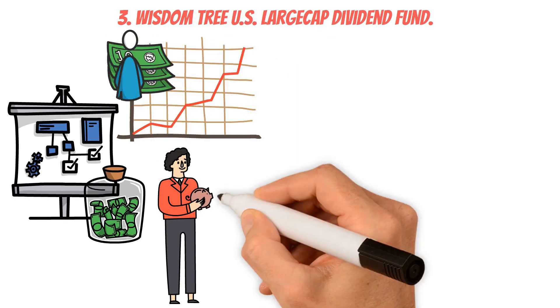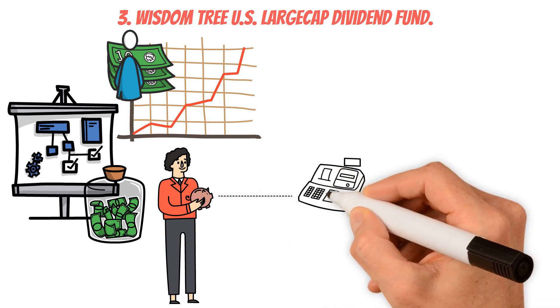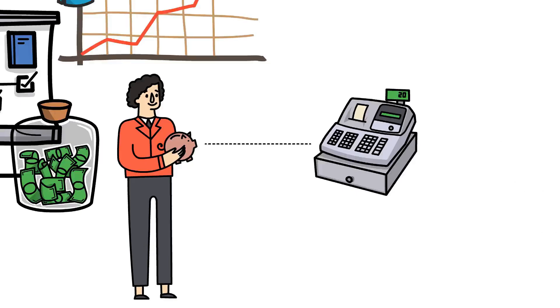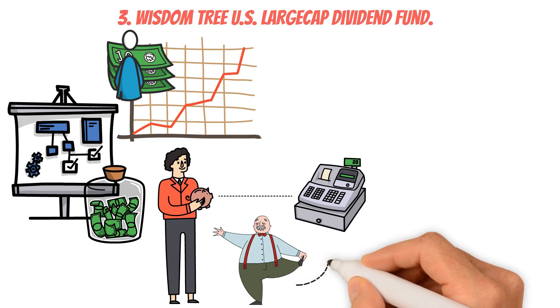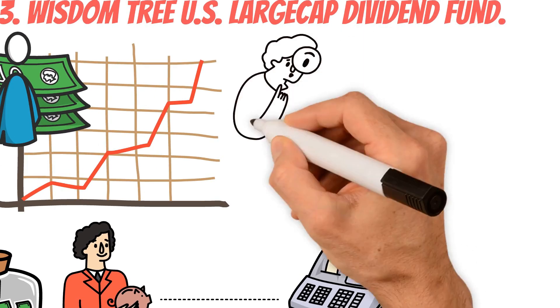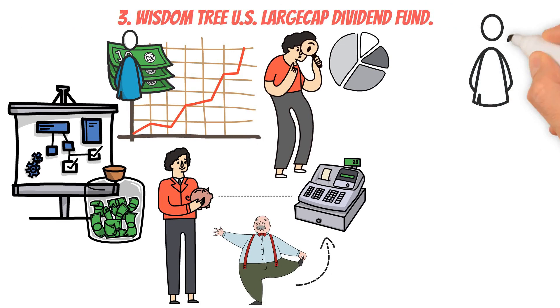This innovative strategy has earned DLN a solid reputation as a compelling choice for income-oriented investors, especially retirees, seeking consistent returns with a focus on stability and risk management. The methodology behind its asset weighing makes DLN unique from other ETFs in its segment. The fund's benchmark utilizes dividends as a key factor to determine the allocation of assets. By doing so,